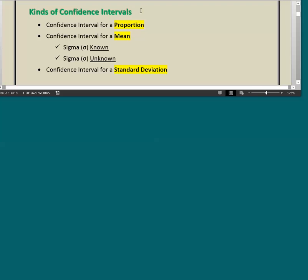What kinds of confidence intervals will we be doing? We will be doing a confidence interval for a proportion, a confidence interval for a mean—and there are actually two kinds: one is called sigma known, the other is called sigma unknown—and the third kind is a confidence interval for a standard deviation. I will be doing videos for each of these.